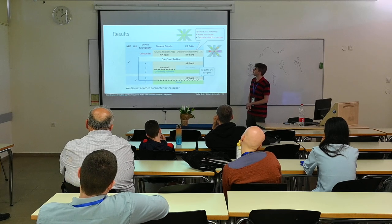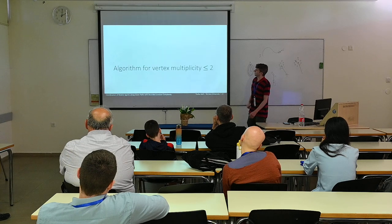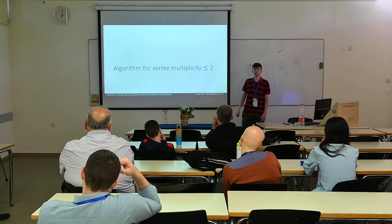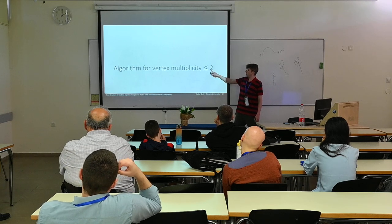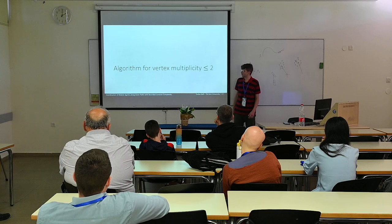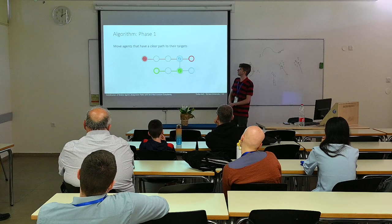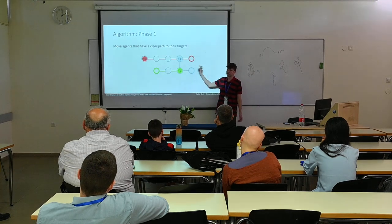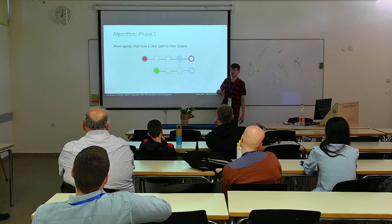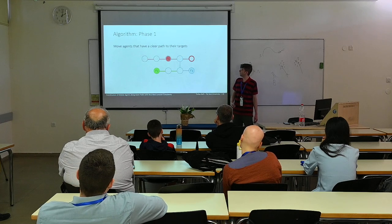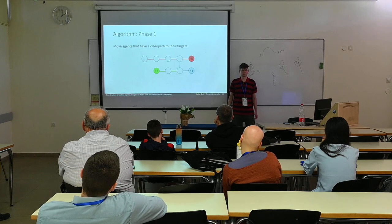I want to give a basic taste of our algorithm for vertex multiplicity 2. In phase 1, we move agents that have a clear path to their targets — meaning they can reach their target without any other agent obstructing them. So R2 can move first, then we check again if another agent can move: R1 moves, then R0 moves. This is the first phase of the algorithm.